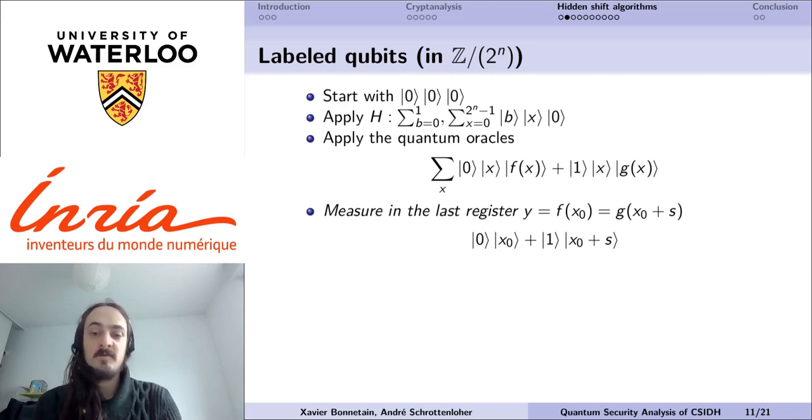This allows us to obtain the uniform superposition of all inputs and outputs over f and g. Then we measure the last register, we obtain a random image of the function, and thanks to the hidden shift promise, this projects the first two registers over this superposition for an unknown value x0.